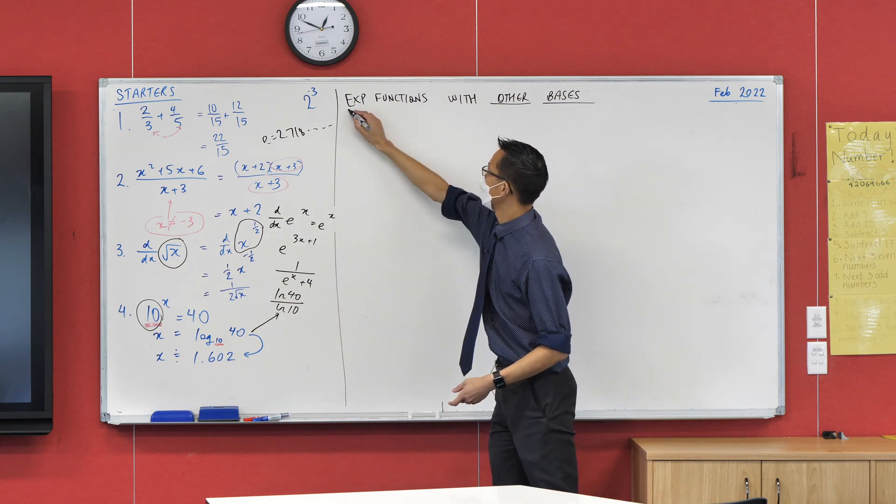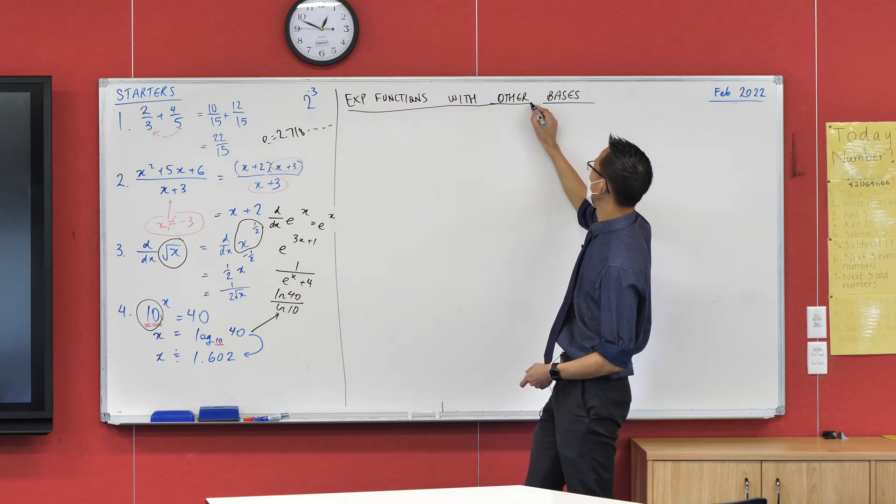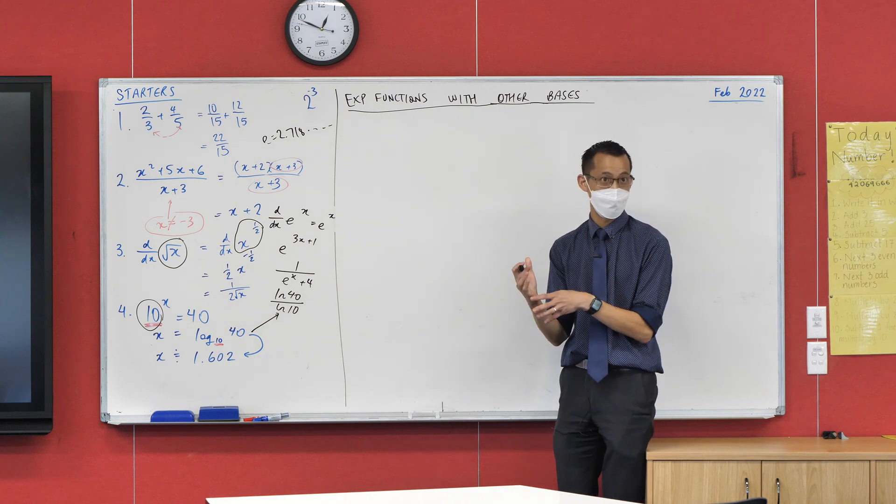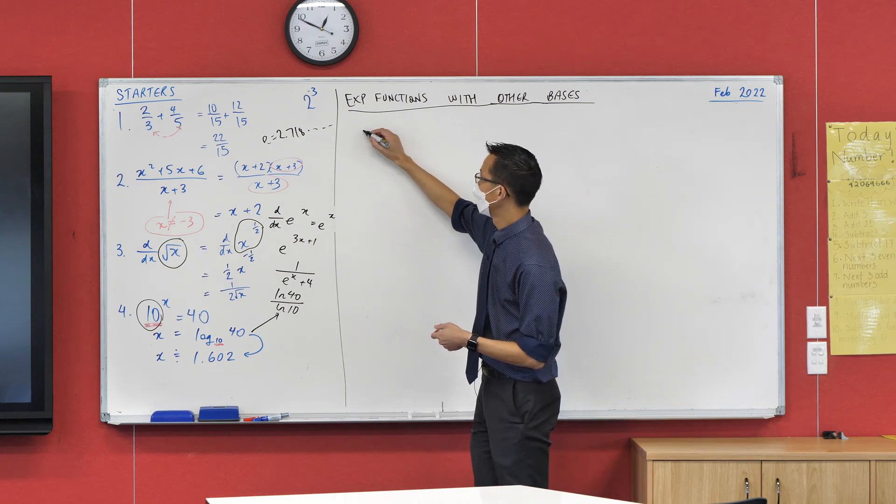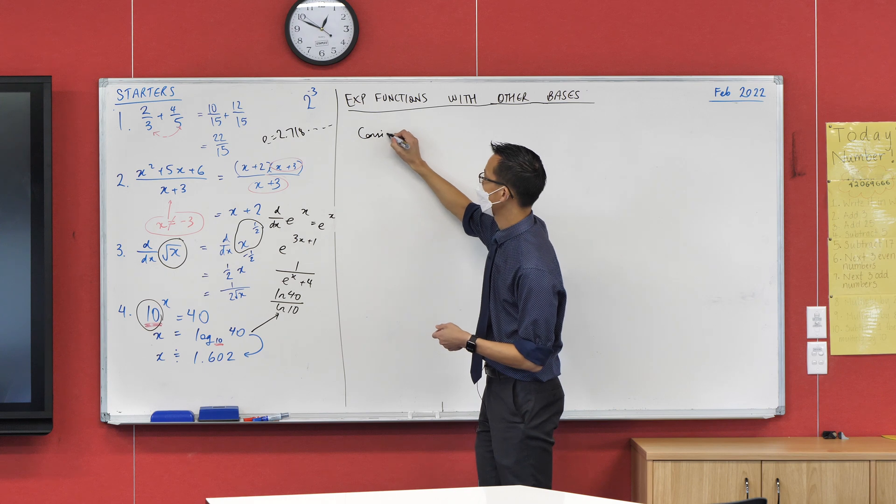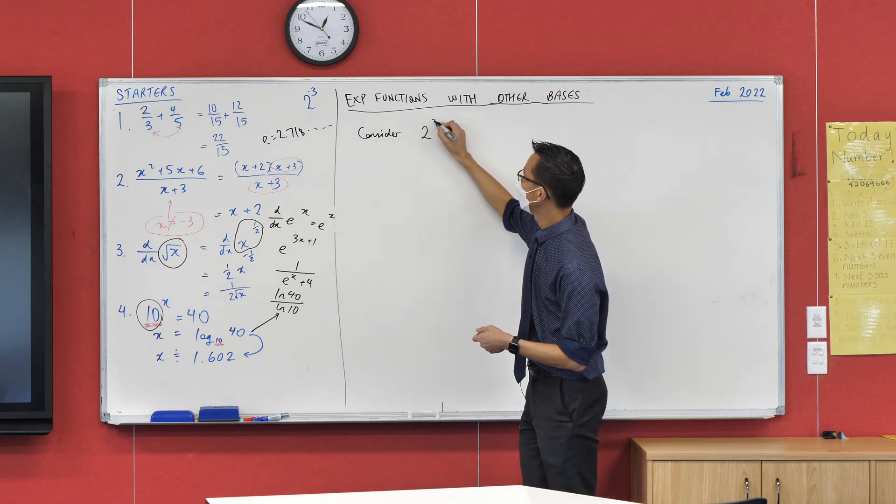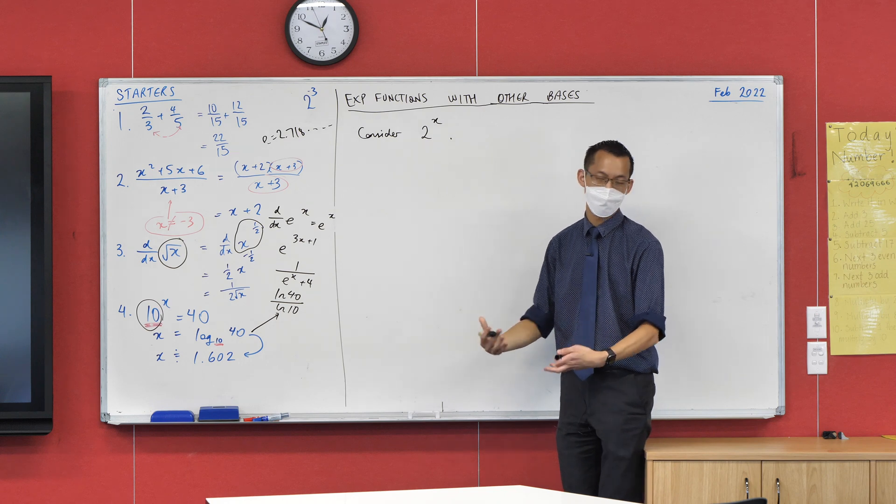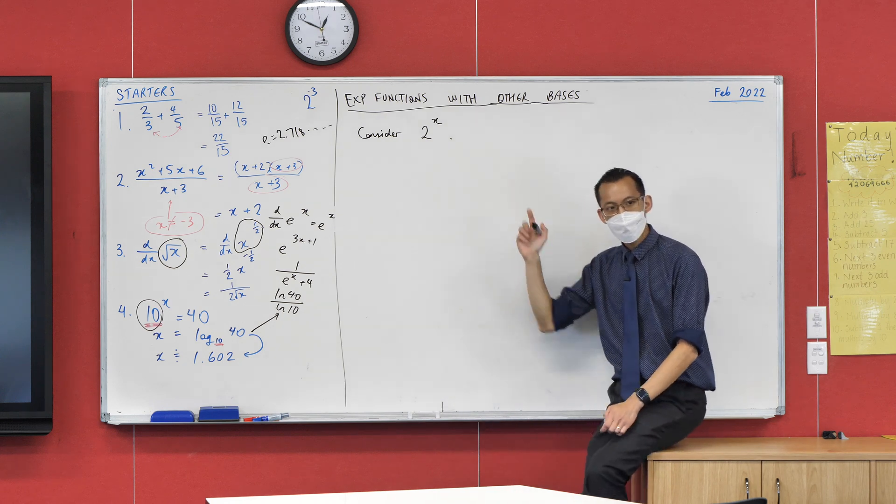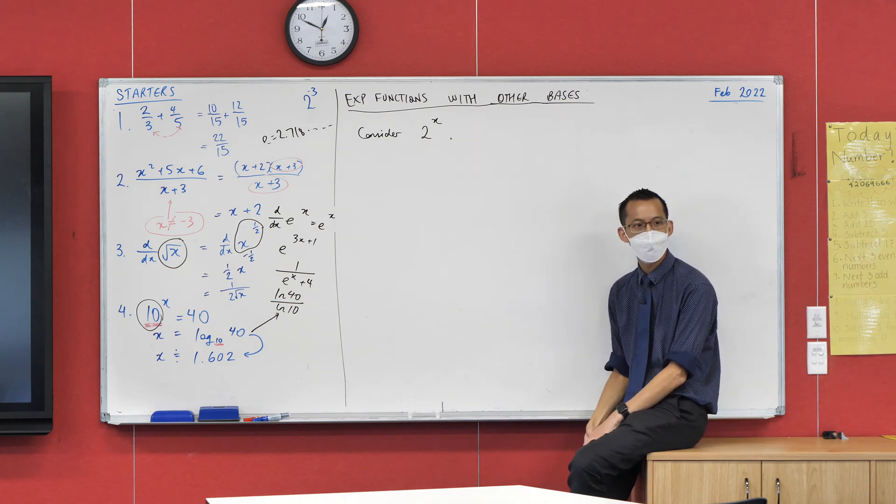So now, here comes an example question. If, for example, I said to you, let's try an exponential function with a base of 2. So maybe you want to jot this down with me. If I considered 2 to the power of x, if I wanted to find the derivative of this, what would I do?